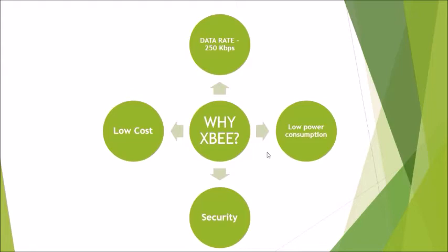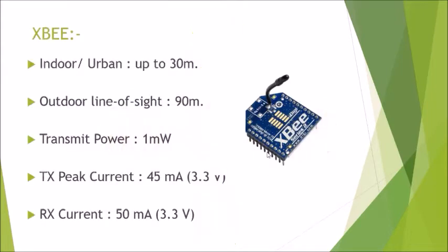As compared to its features, ZigBee's cost is very low and it has low power consumption. Some key specifications of ZigBee: its indoor range is 30 meters and outdoor range is 90 meters. Transmit power, TX peak current, and RX current specifications are also provided.